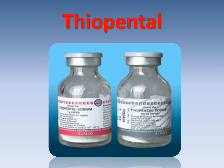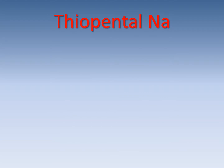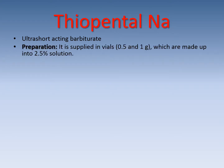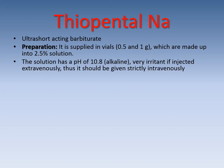The first example we are going to talk about is thiopental or thiopental sodium. Thiopental sodium is an ultra-short-acting barbiturate. It is supplied in vials of half gram and one gram, which are made up into a solution of a concentration of 2.5% by injecting appropriate saline into the vial. The solution has a pH of 10.8, which is alkaline and very irritant if injected extravenously. Thus, it should be given strictly intravenously.